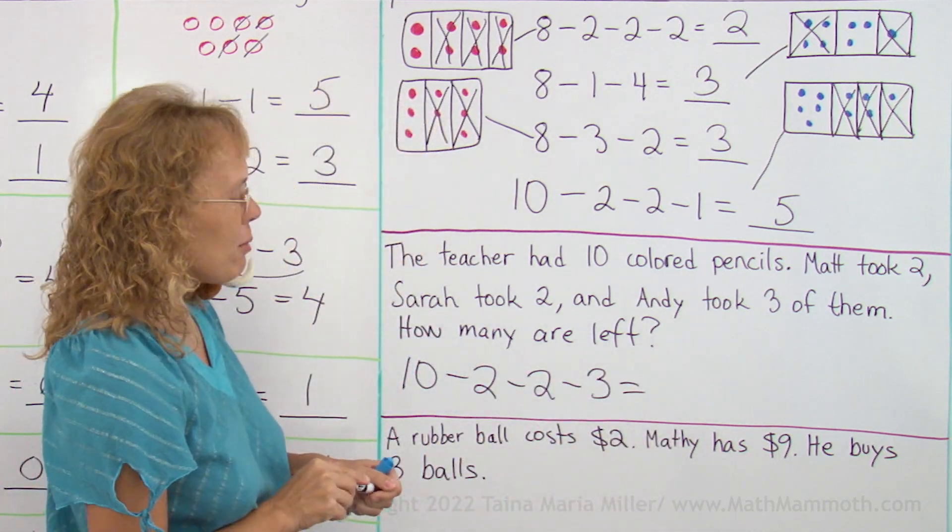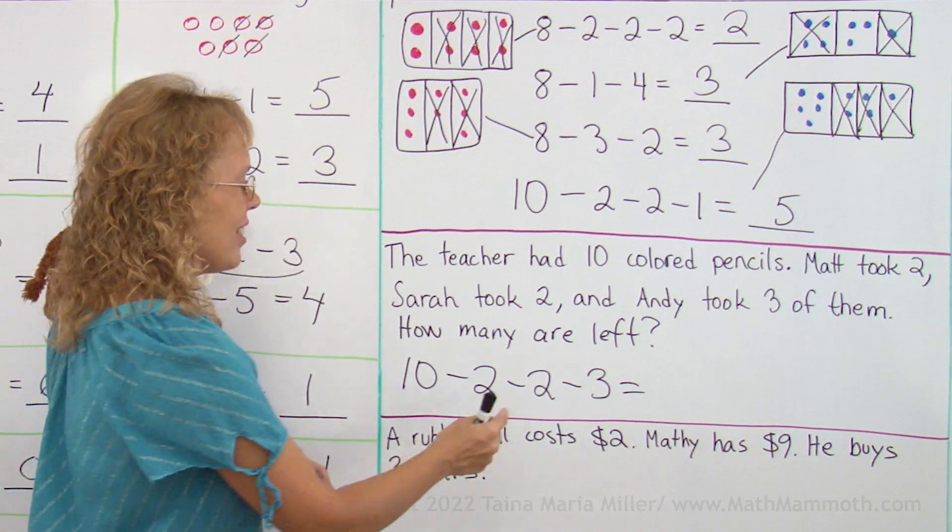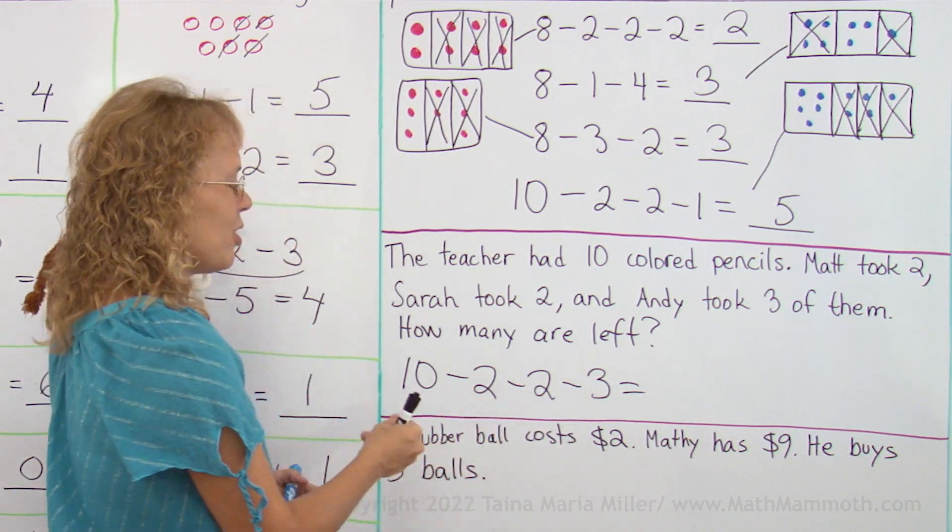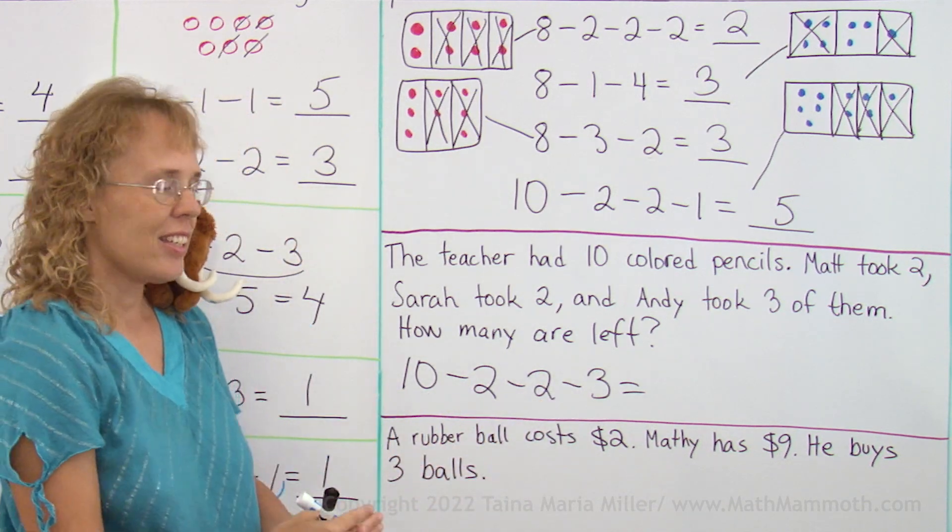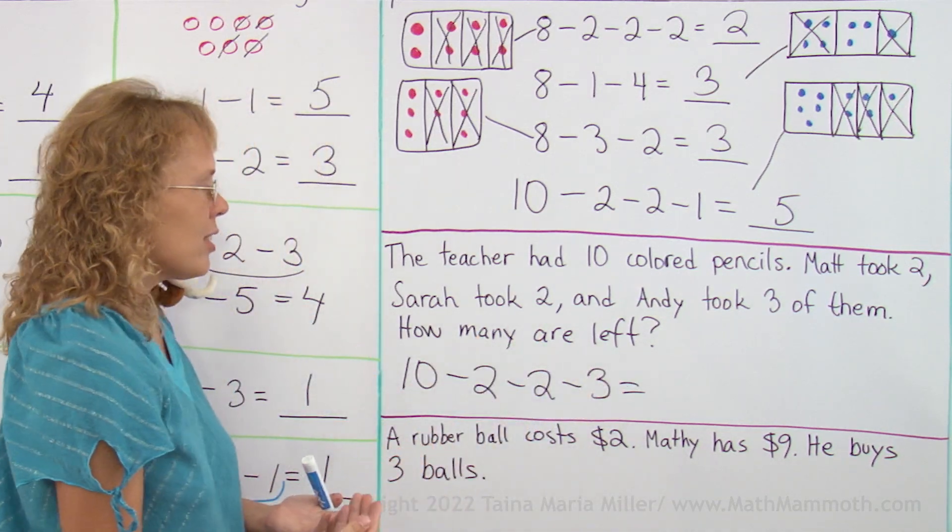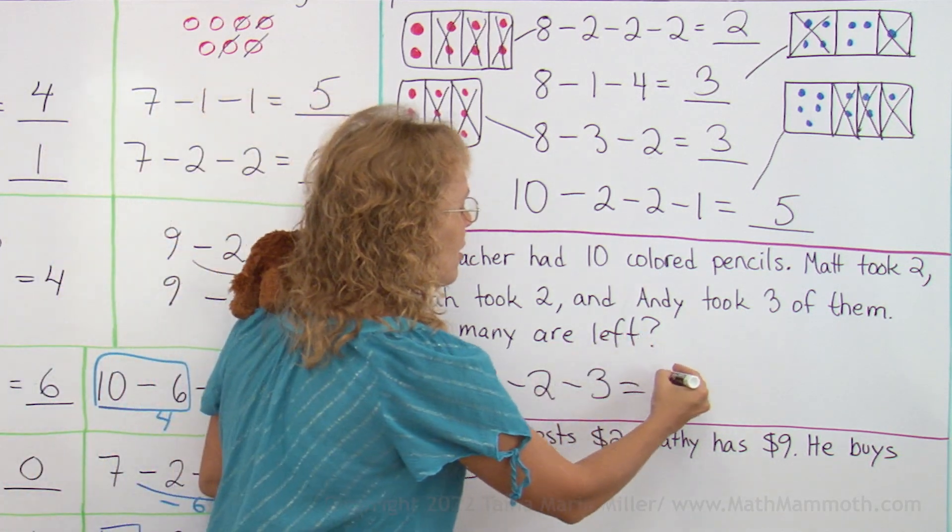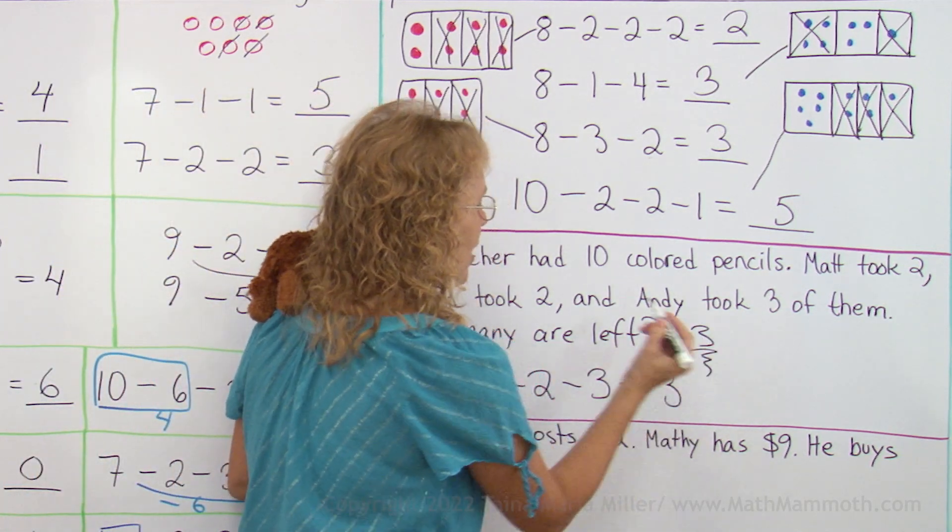But to solve it, we can think of addition first. We can add 3 and 2 and 2, you know, how many did they actually take in total? There's 2 and 2 makes 4, plus 3, that's 7. So they took a total of 7 pencils. 10 minus 7 equals 3, that's 3 pencils left.